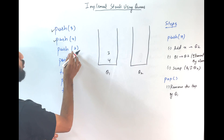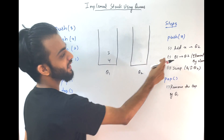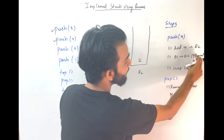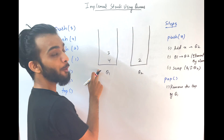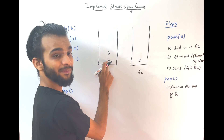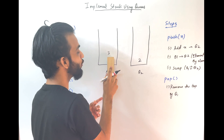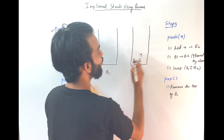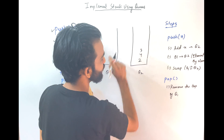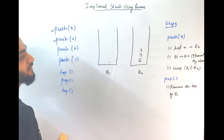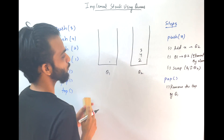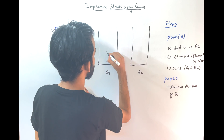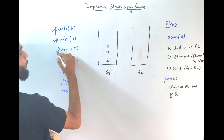Next, push of 2. Add 2 to Q2. Now element by element — which is the top element of Q1? It's 4, so first 4 will go, then 3 will go, because the queue works in this direction. After that, swap. So if you swap, 2, 4, 3 will come across. Push of 2 is done.